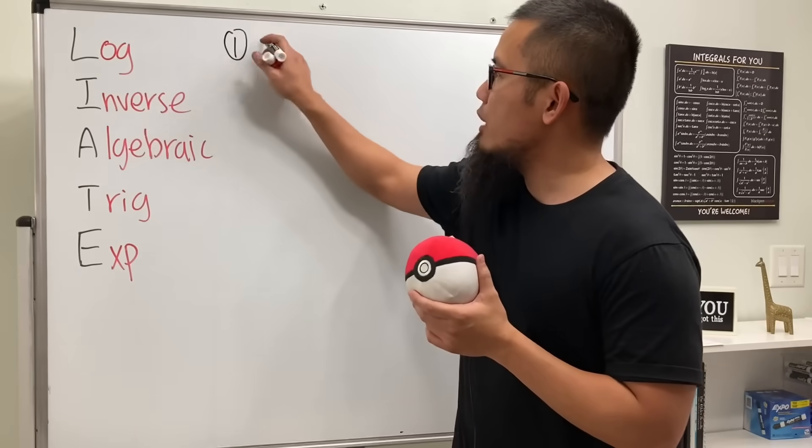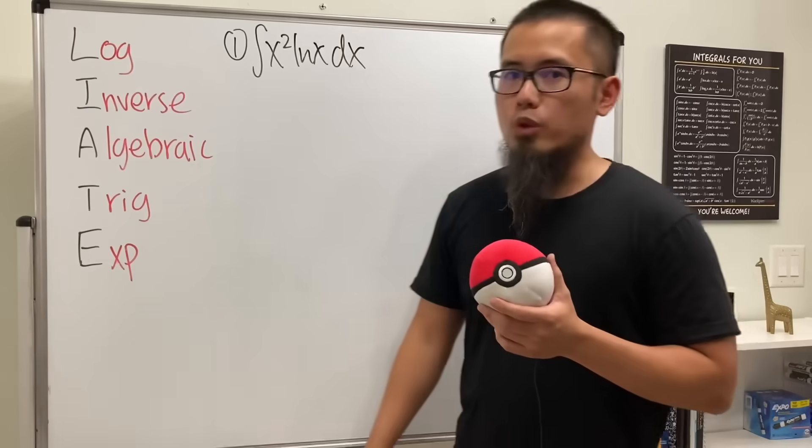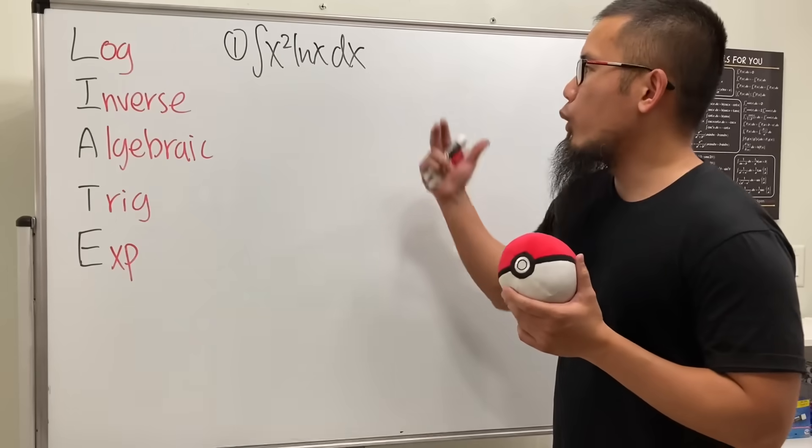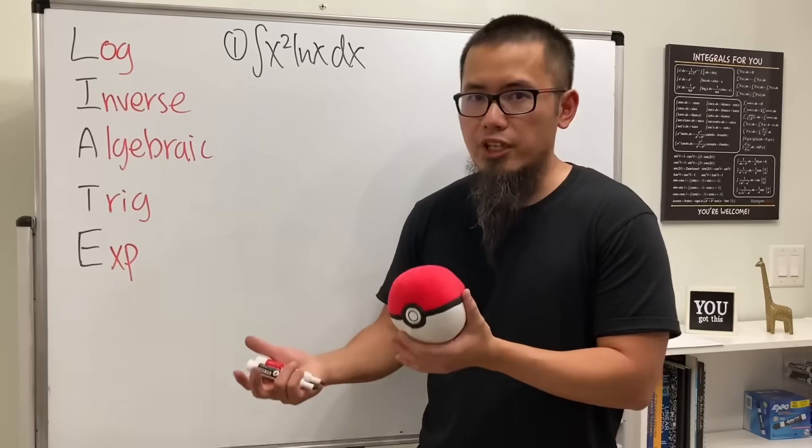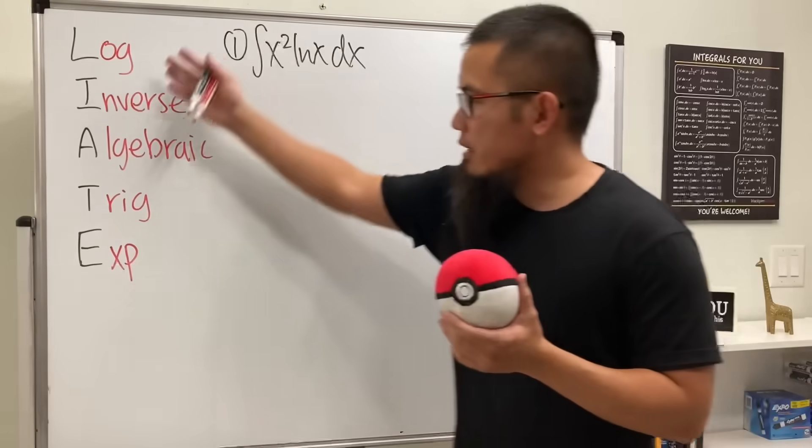Suppose we have to integrate x squared times ln x. And yes, this right here needs integration by parts, but the hard part is how do we know which part to choose to be differentiated and the other part to be integrated? Well, that's what this right here comes in.